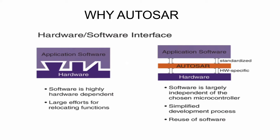Before we start to discuss about AUTOSAR layers, first we have to understand why AUTOSAR is important. Before AUTOSAR, the complete ECU was built based on the OEM requirement and OEM architecture. OEM had to instruct the requirement to the supplier, and the supplier had to build the ECU based on the OEM requirement and OEM architecture. If the OEM wants to change the supplier, then they have to instruct the same requirement to the new supplier, and the new supplier has to work based on the OEM architecture and OEM requirement. These cases create more complexity and take more time.